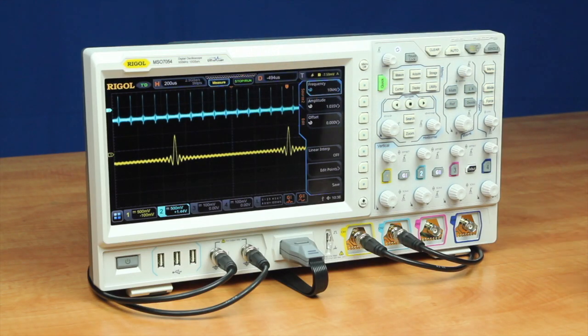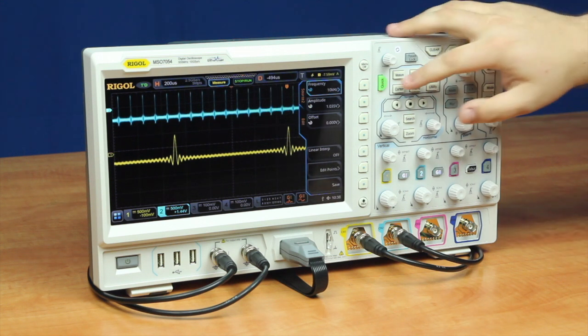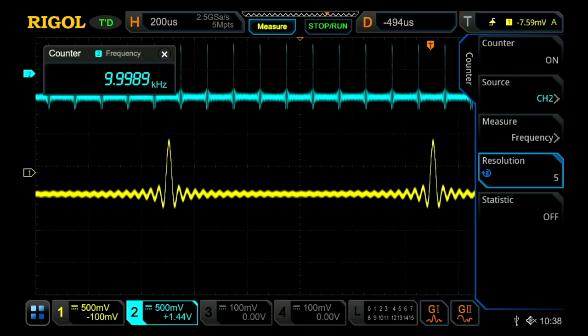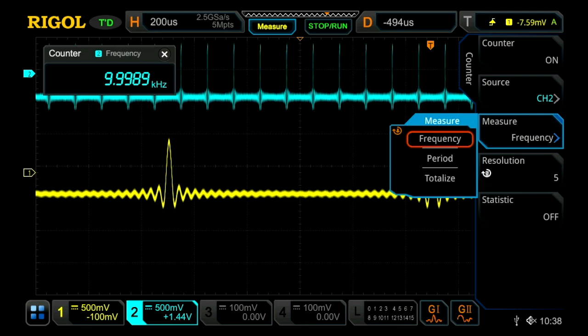Now that we've got these turned on, another useful tool that's built into the instrument is our counter function. The counter function can be used to both count the frequency, but it can also be used to measure the period and then the totalizer, the number of peaks.